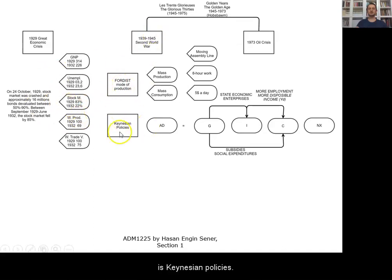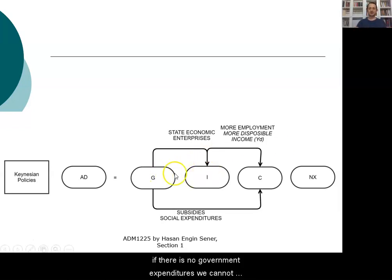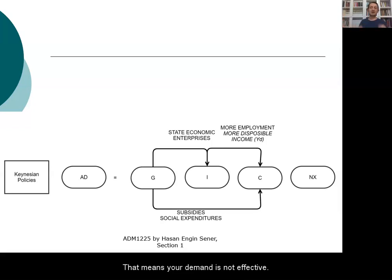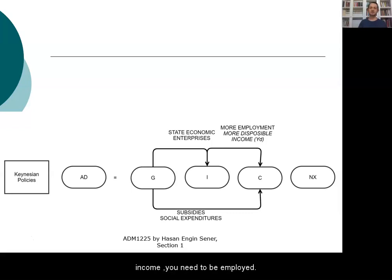The second component is Keynesian policies. In terms of Keynesian policies, we explained why government is needed in the economy. He argued that without government expenditures, we cannot increase aggregate demand, so people's demands cannot be effective. You may want to buy something, but if you cannot afford it, your demand is not effective. To make it effective, you need disposable income.